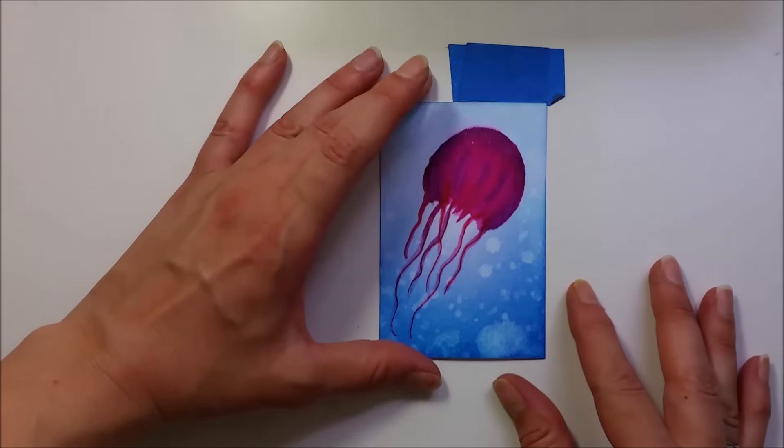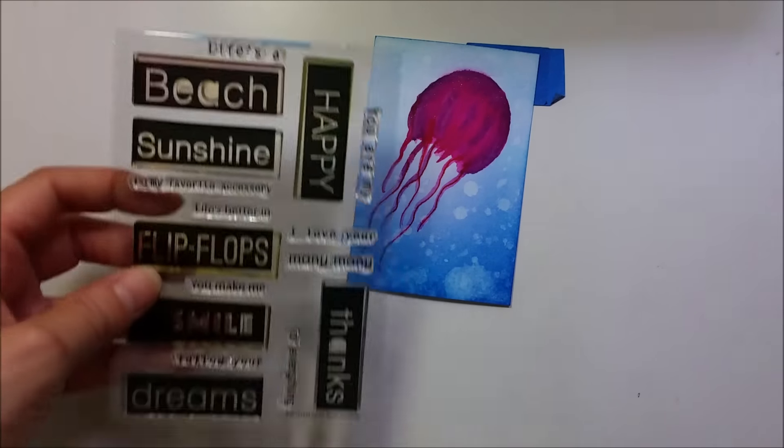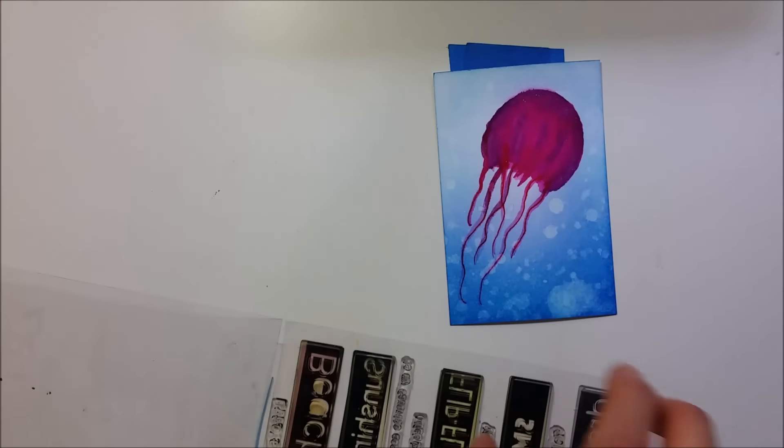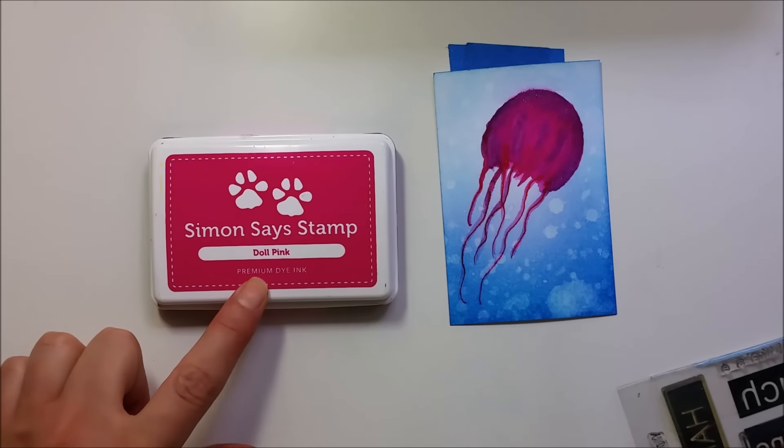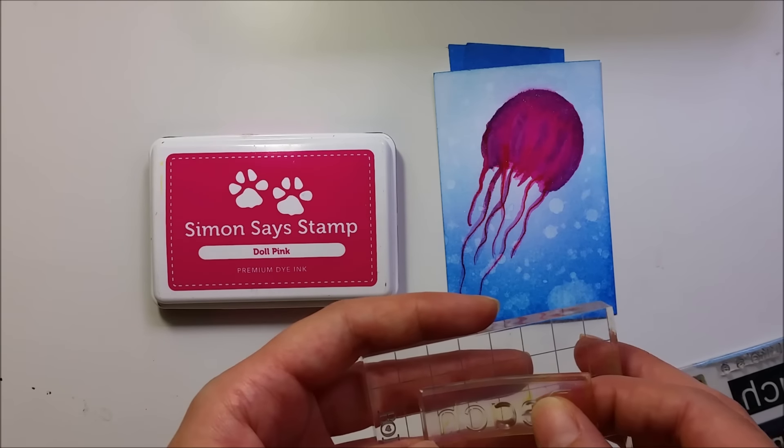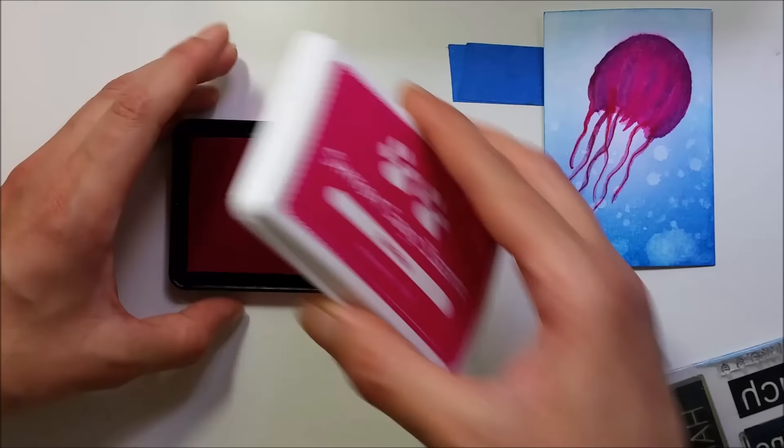Now I'm gonna work on my sentiment. I'm gonna be using the stamp set from Simon and I'll be stamping this beach right here. I'm using the doll pink, it is a very bright pink, and I think it works great with blue and also matches a bit my jellyfish here.